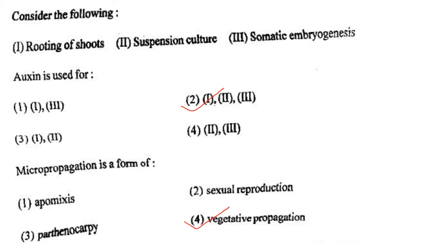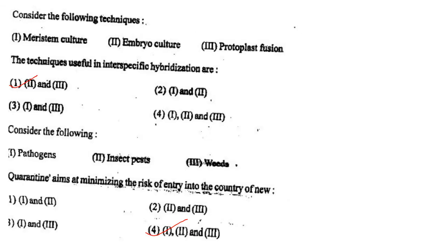Next one: Micropropagation is a form of option 1, apomixis; option 2, sexual reproduction; option 3, parthenocarpy; option 4, vegetative propagation. Answer is option 4: vegetative propagation.